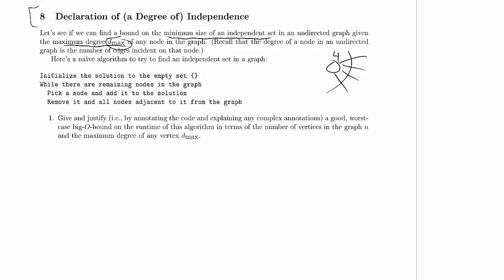It's actually a naive and greedy algorithm. We initialize the solution to the empty set, and while there are remaining nodes in the graph, we pick a node arbitrarily, add it to our solution, and then remove that node and all nodes adjacent to it from the graph.